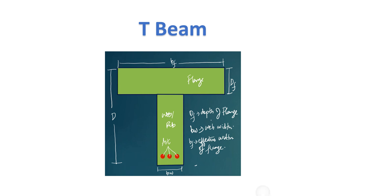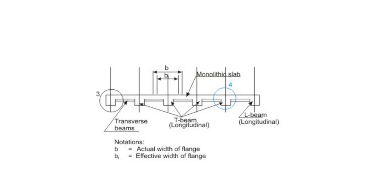In most cases for a simply supported beam, the flange takes the compression and the reinforcement takes the tension. In some cases of a T-beam section, some part of the web will also take compression.